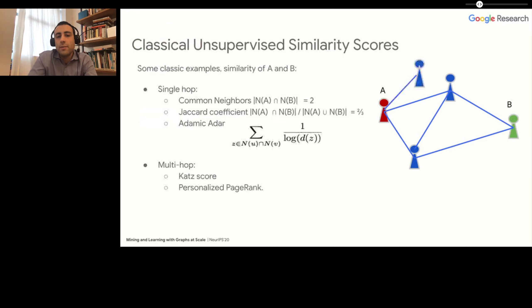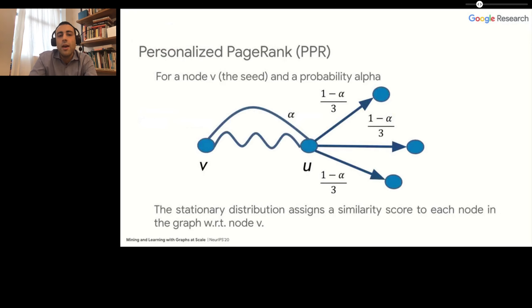All of these similarities are based on a single hop, but of course you can analyze multiple hops in this graph and still define good notions of similarity. This is what is done in personalized PageRank.